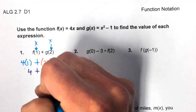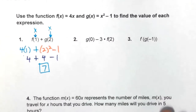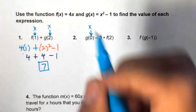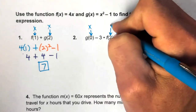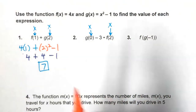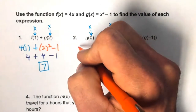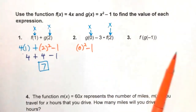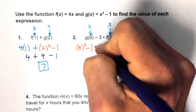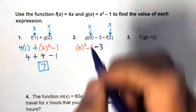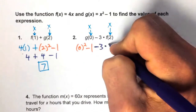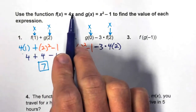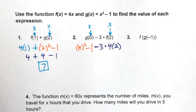Number two: for g(0), substitute zero everywhere you see x in g(x). Same for f(2) — substitute 2 for x. So g(0) becomes 0² - 1, and then minus 3 times f(2), which is 3 times 4 times 2.